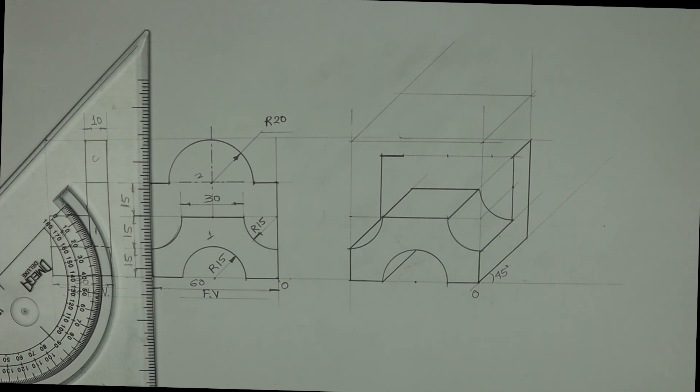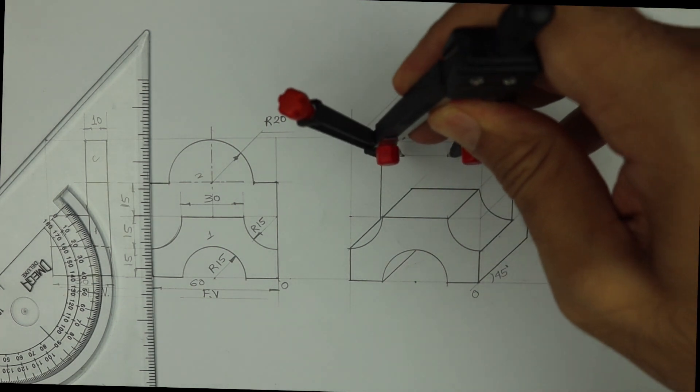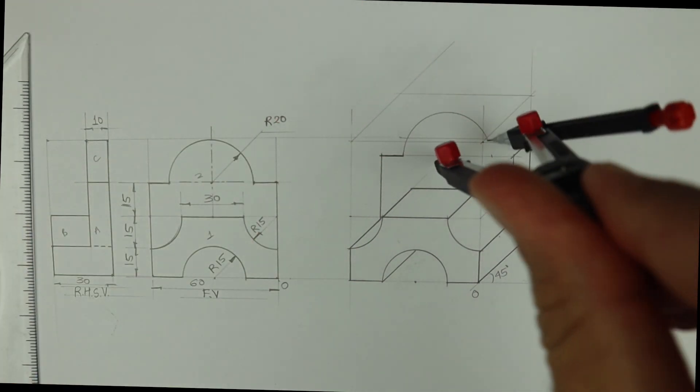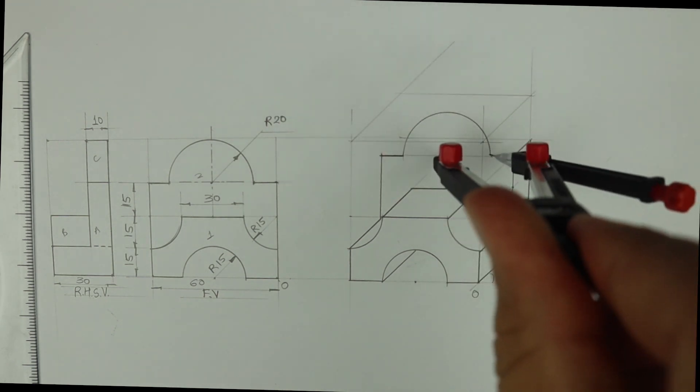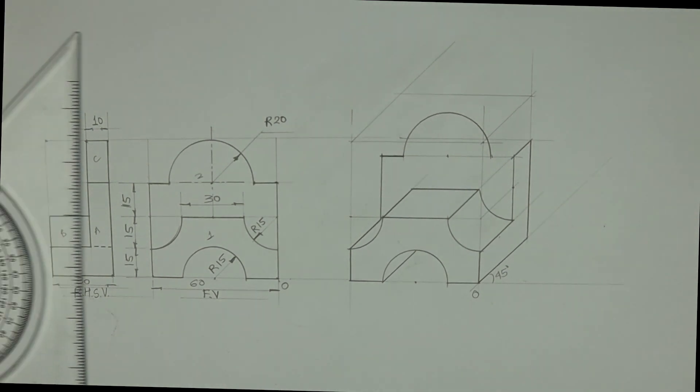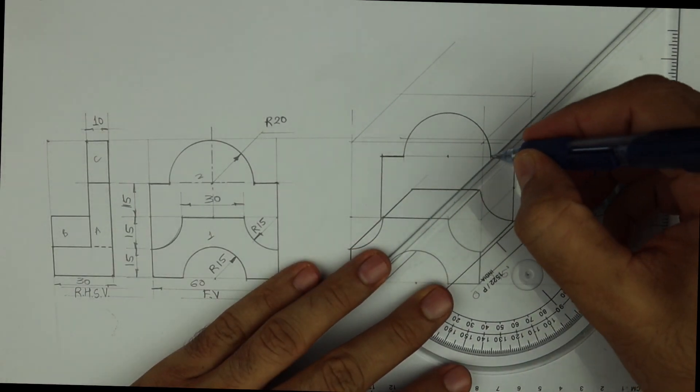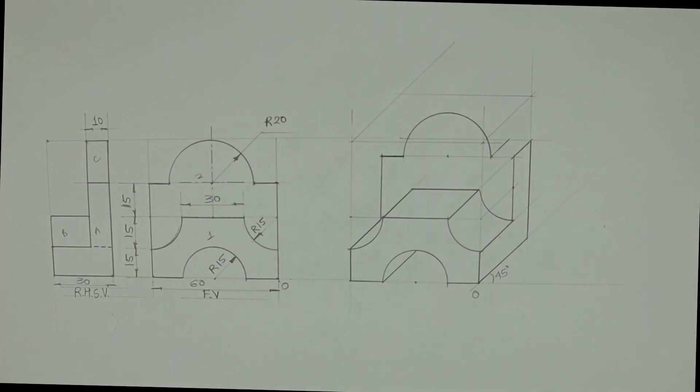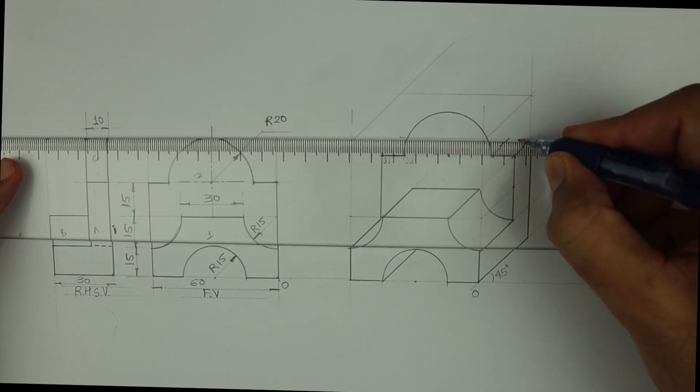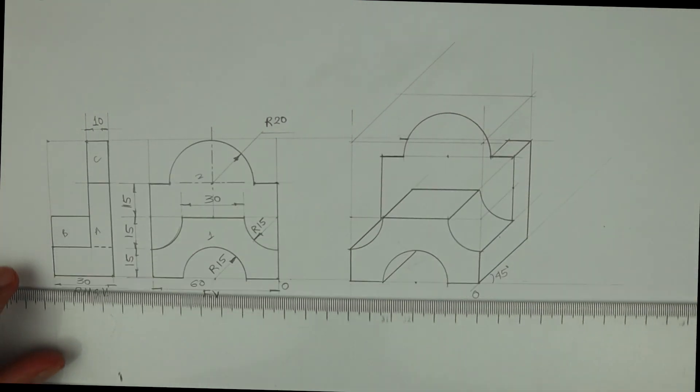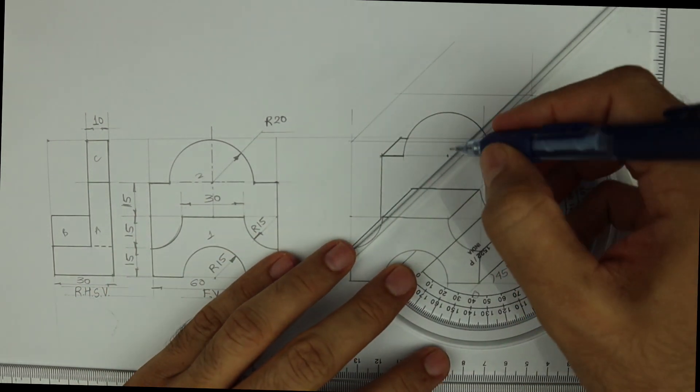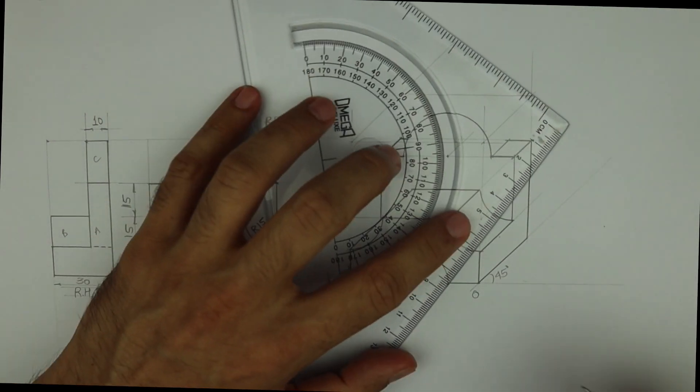Now we need to draw that circle which is radius 20. So take radius 20 and draw. Then you take that line behind by 10. See this way. Then take this point behind by 10, center point.